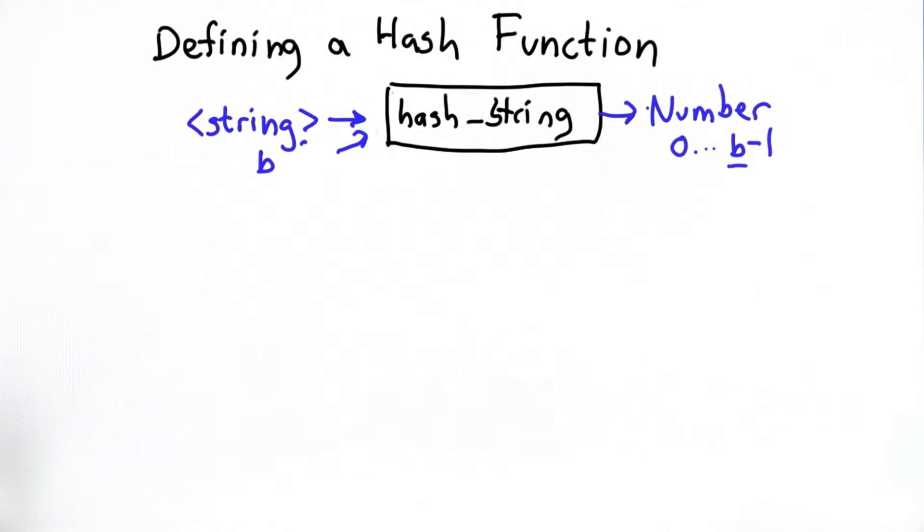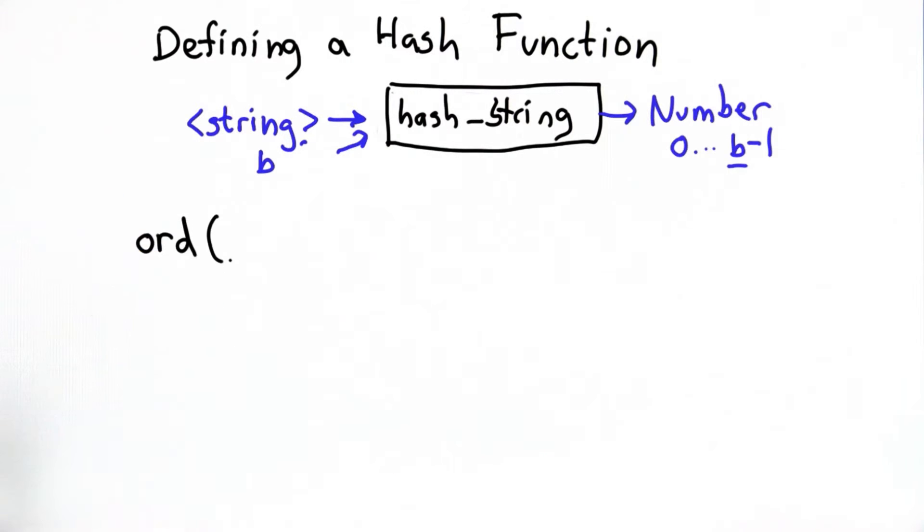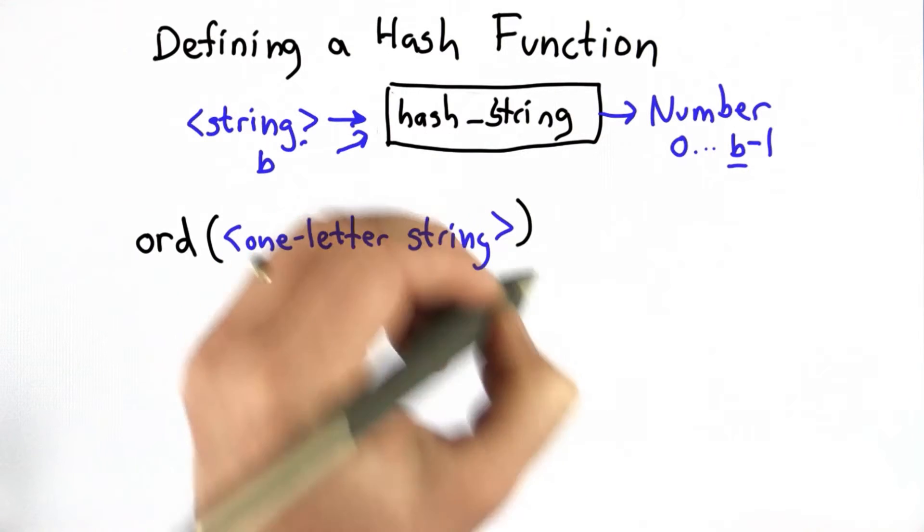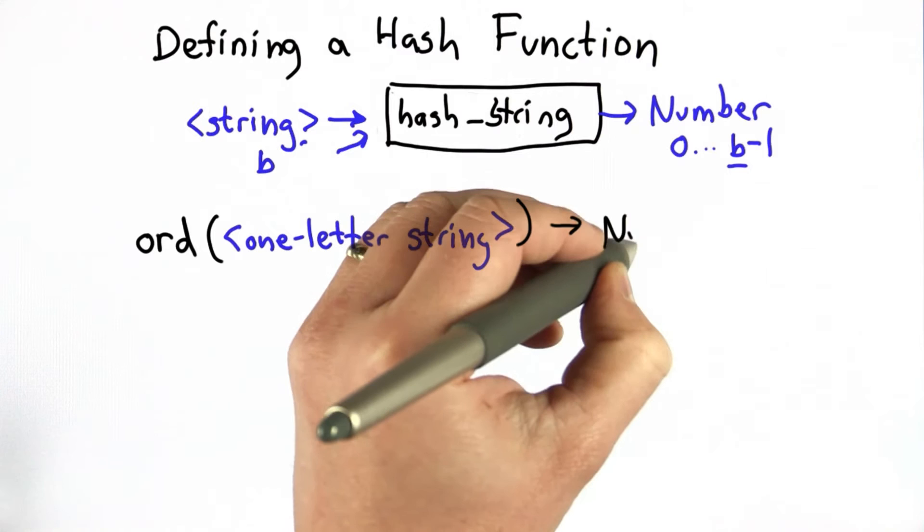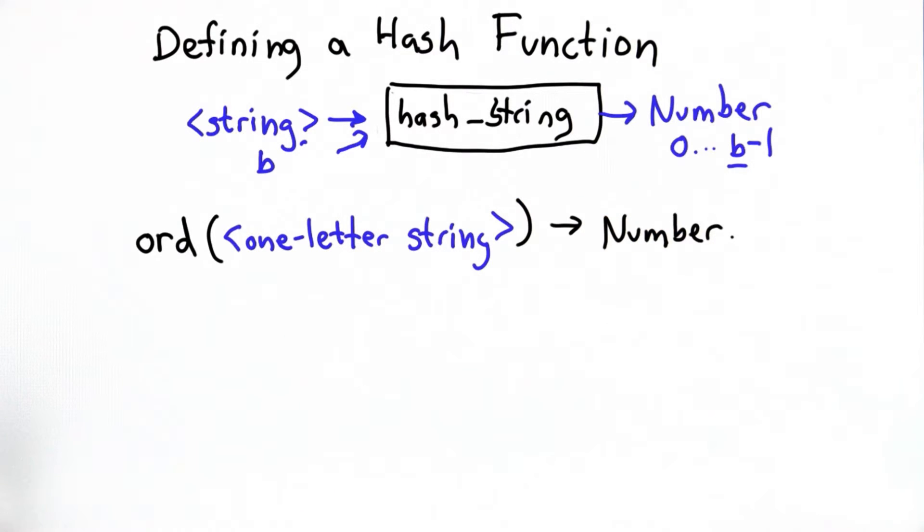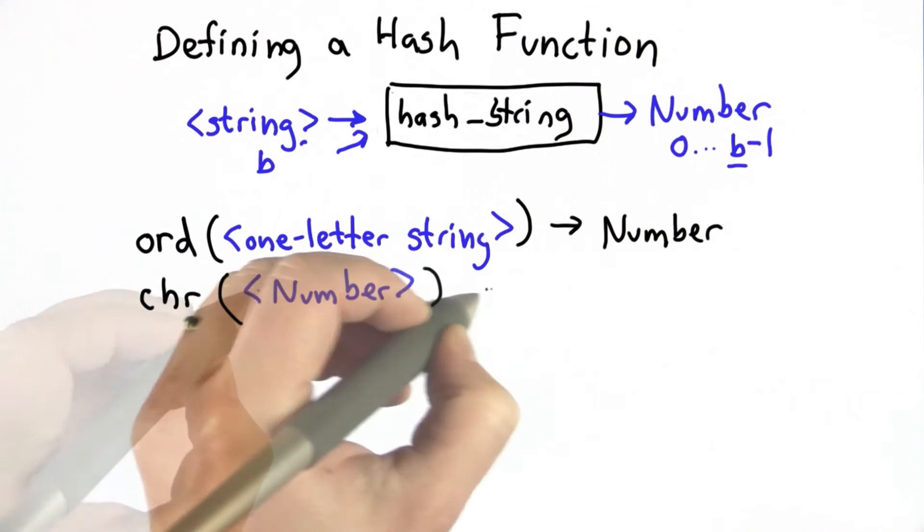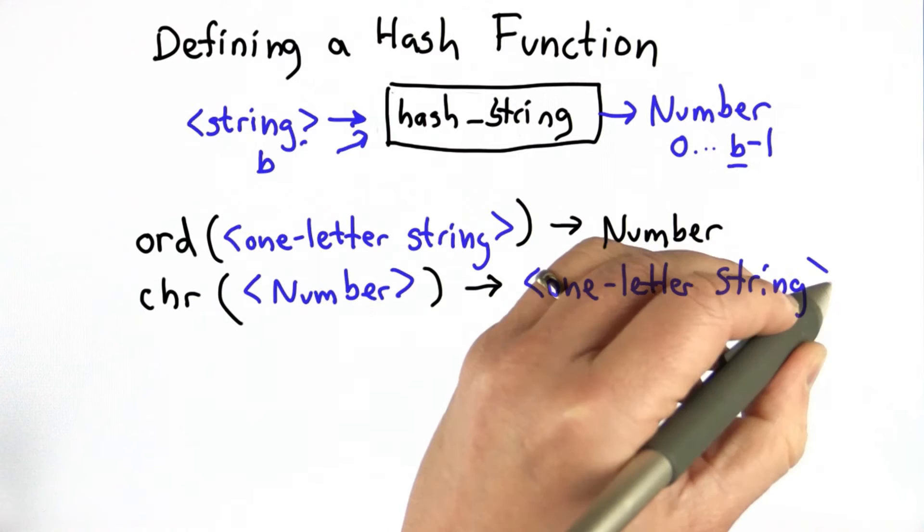What we haven't seen yet that we're going to need for this function is a way to turn a string into a number. Python provides an operation to do that. It's called ord for ordinal. And what ord takes as its input is a one-letter string and produces as its output a number. And the actual mapping between strings and numbers is not so important. We just want something that's going to map different strings to different numbers. There's another operator that goes in the opposite direction that takes in a number and outputs the one-letter string that corresponds to that number.